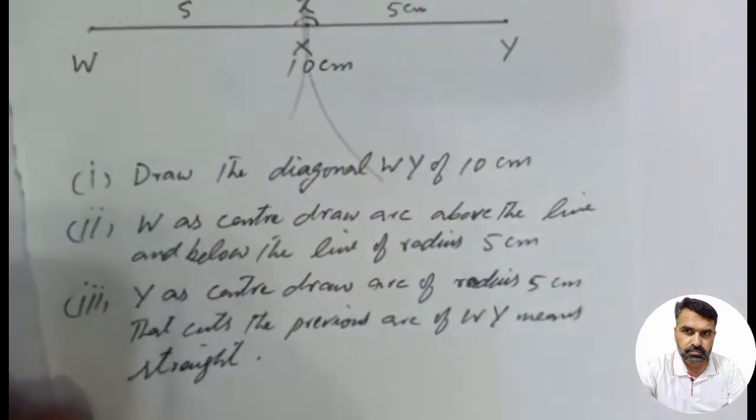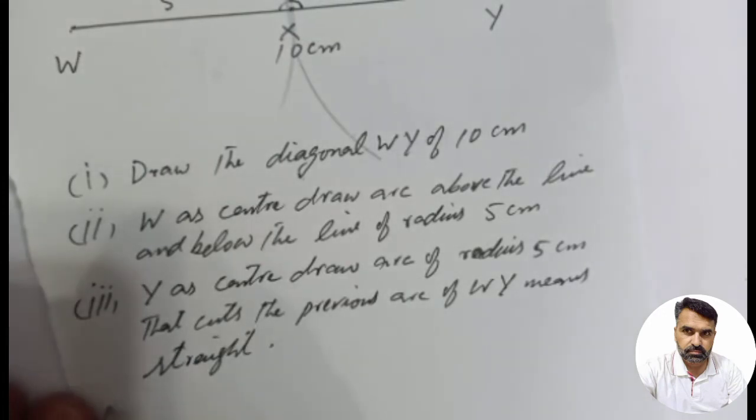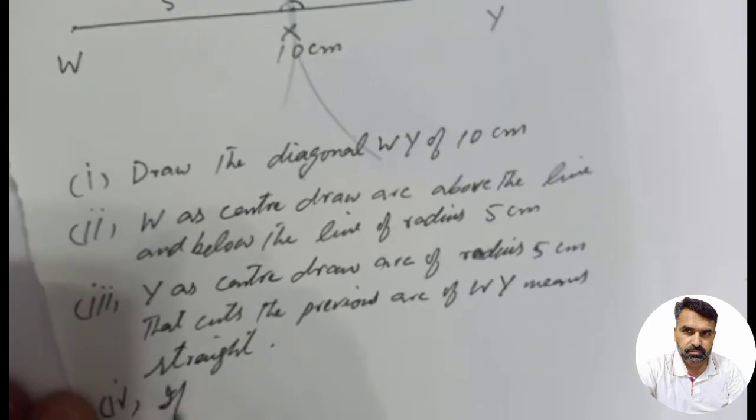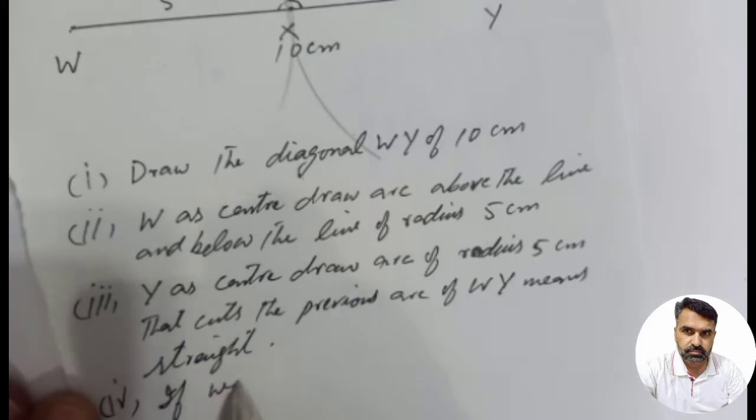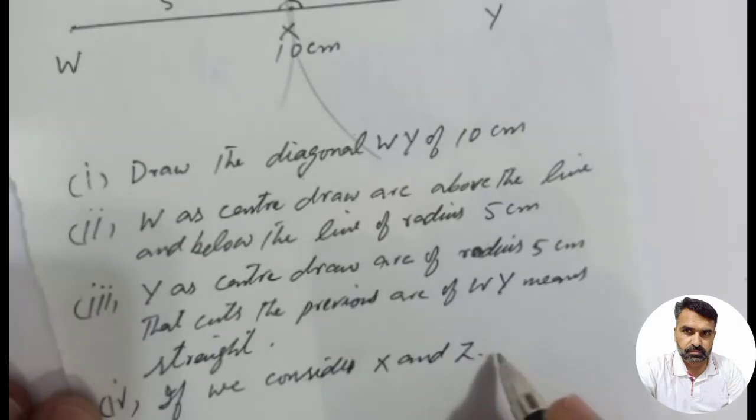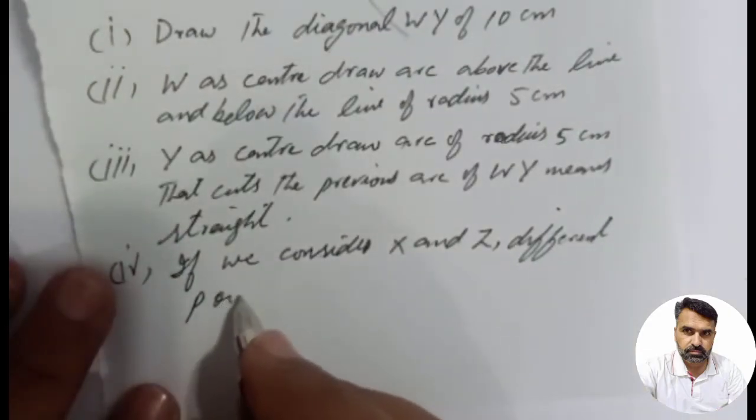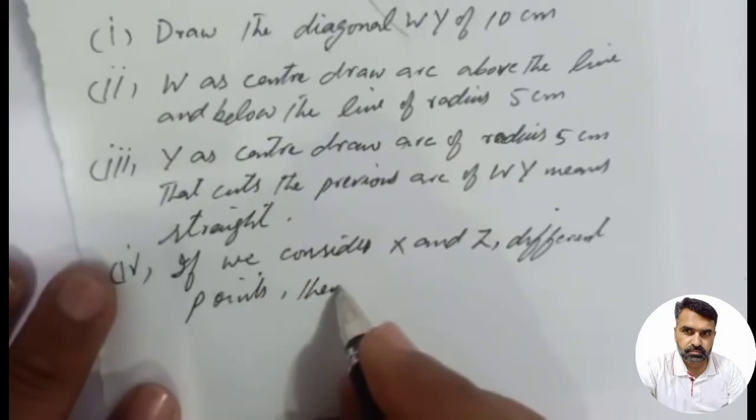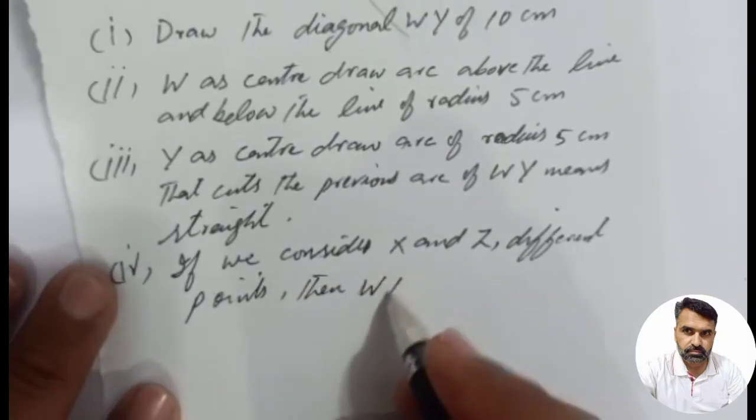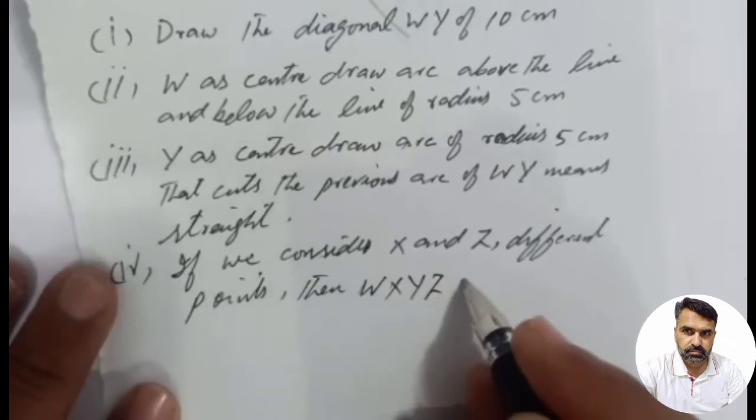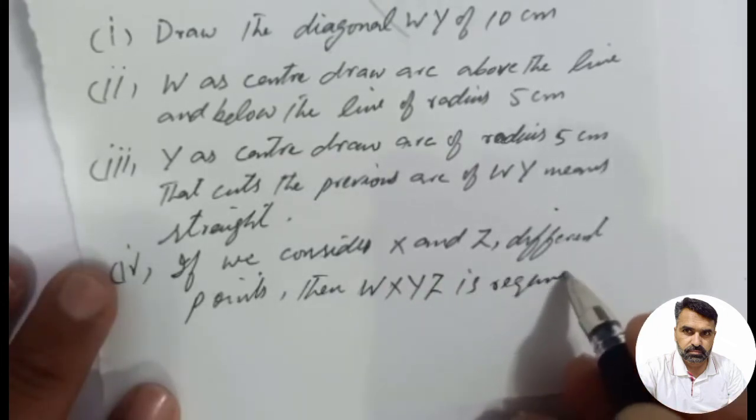Number 4: If we consider X and Z as different points, then WXYZ is the required rhombus.